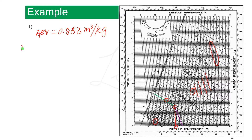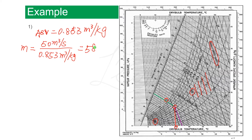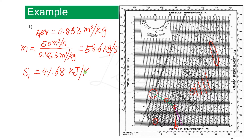So the mass flow rate equals 50 divided by 0.853, which equals 58.6 kilograms per second. Also from the chart, we can read off that the sigma heat at state 1 equals 41.68 kilojoules per kilogram.